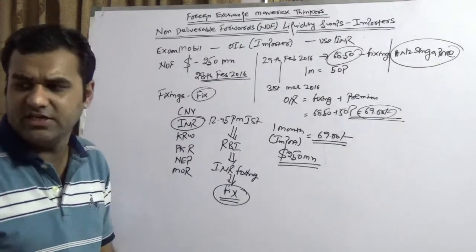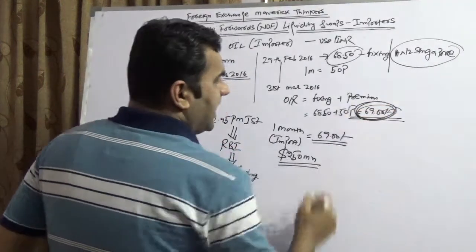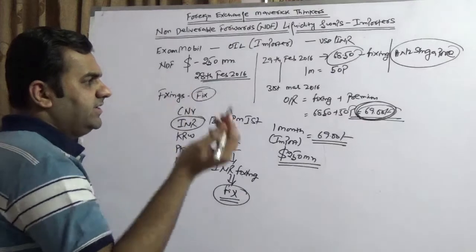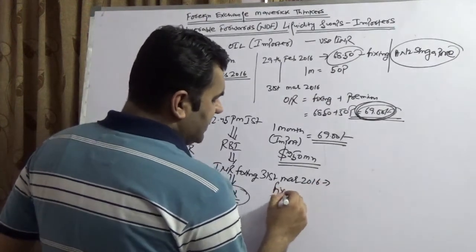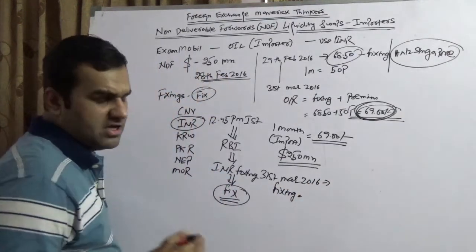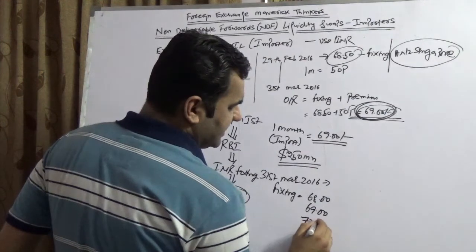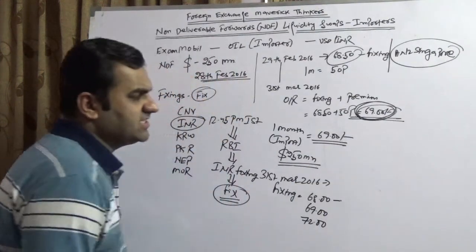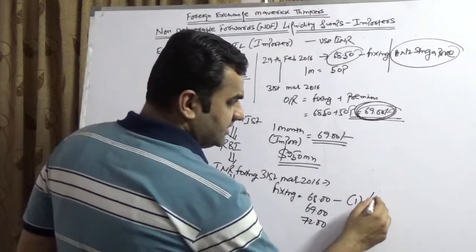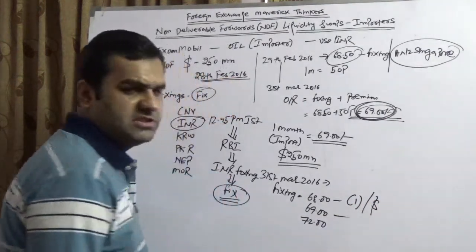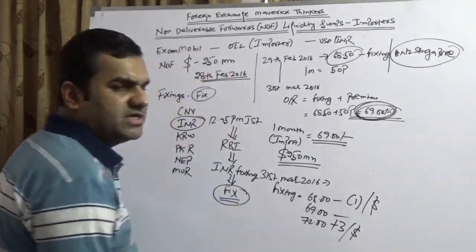So 29th February 2016, they are done with the NDF and NDF rate is 69 rupees. Now this is a part of their books. Now they'll wait. Now 31st March 2016, assuming the fixing by RBI, we will take three fixings. Assuming the fixing by RBI is 68, assuming fixing is 69, assuming fixing is 72. If the fixing is 68 and you bought at 69, you would have loss of one rupee per dollar. If it is 69, it would be zero. If it would be 72, you would have a gain of three rupee per dollar.